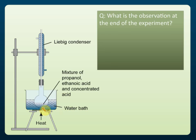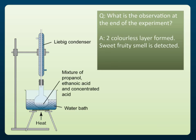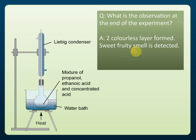What are the observations at the end of the experiment? Esters are insoluble in water, so if an ester forms it will create two layers. Ester is colourless, so you will see two colourless layers. Since ester has a lower density than water, it floats on the surface, and it has a sweet, fruity smell.